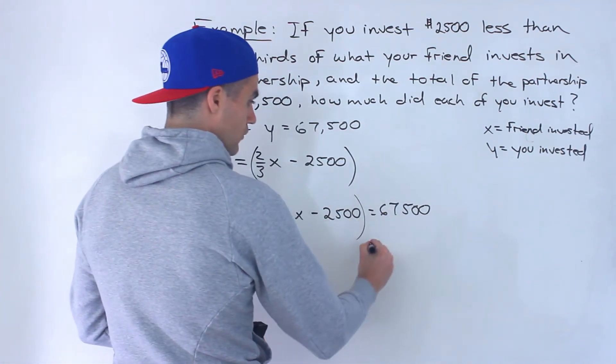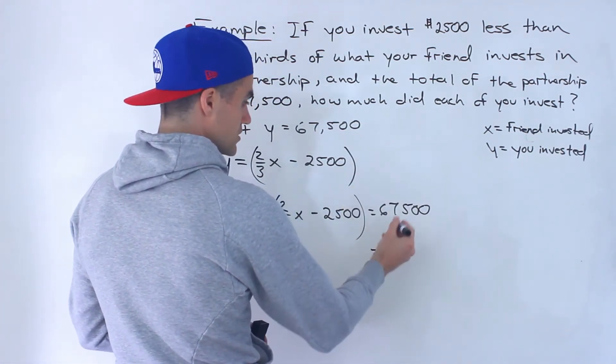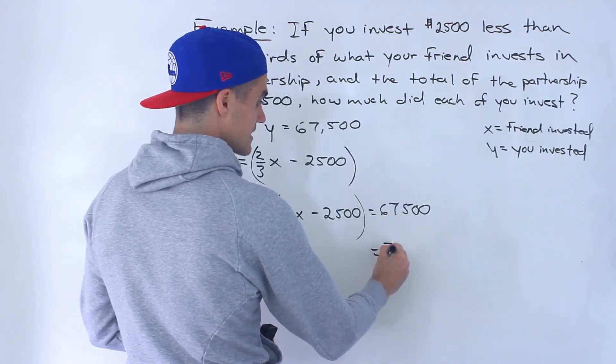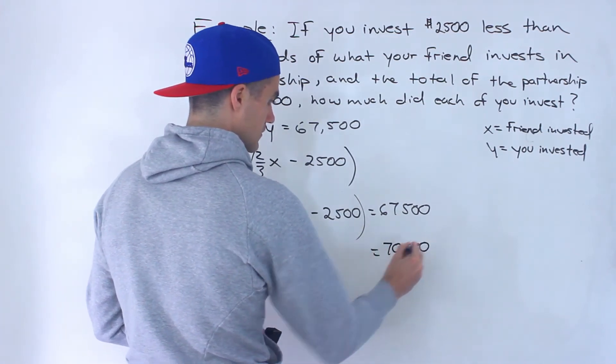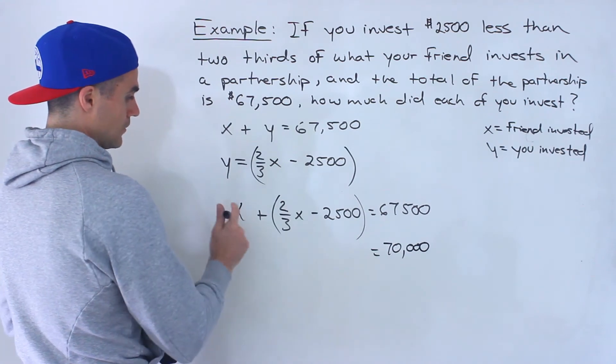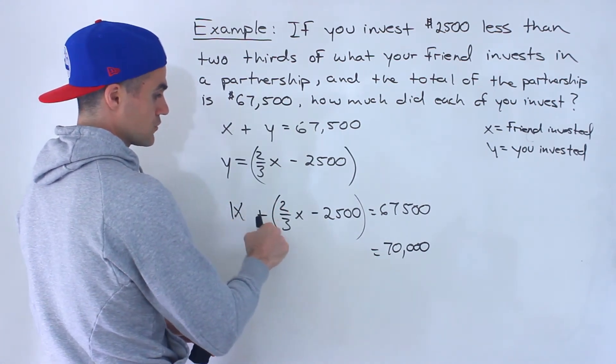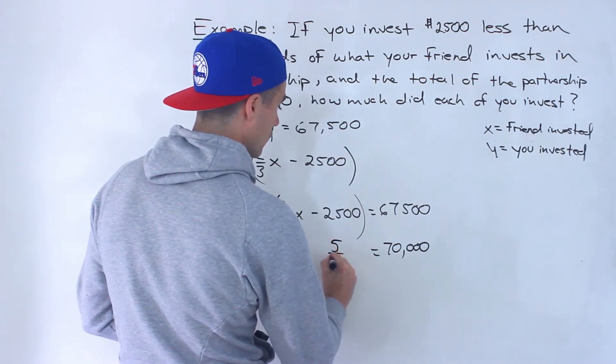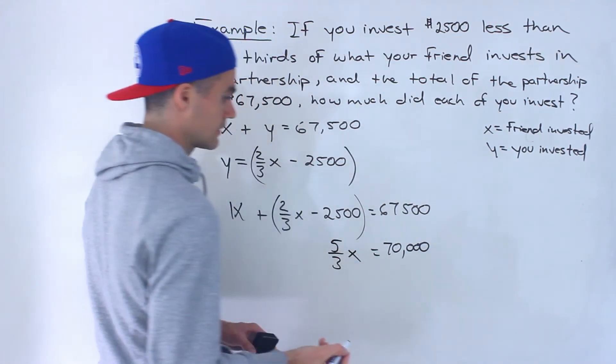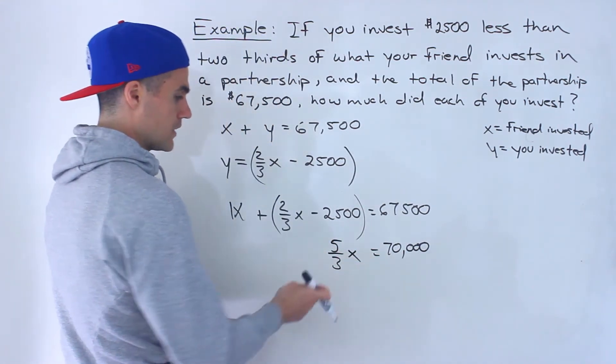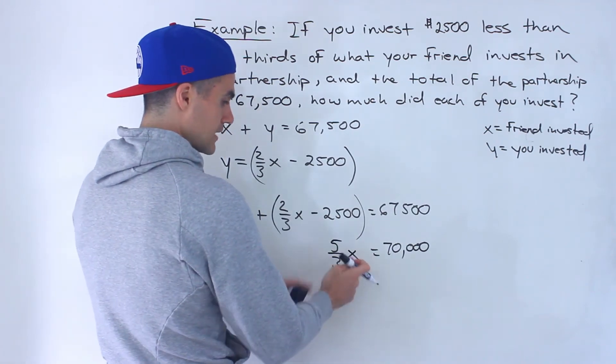So in this case, what we would do is we would bring this over. So $67,500 plus $2,500 would give us $70,000. And then notice we have 1x plus 2 over 3x, which would be 3 over 3x plus 2 over 3x, which would be 5 over 3x. We could divide both sides by 5 over 3 to get the x by itself.